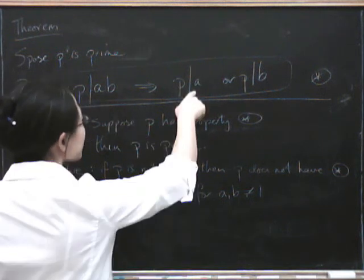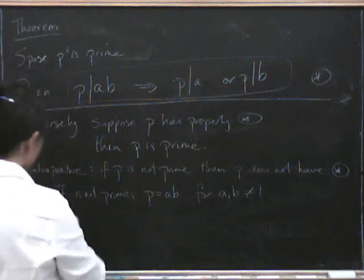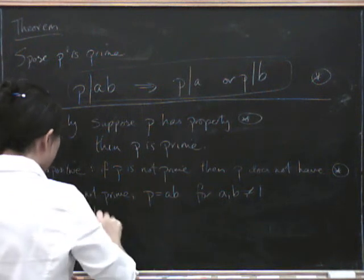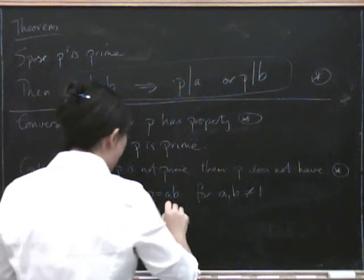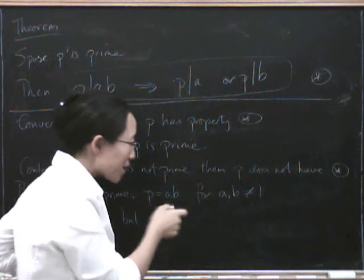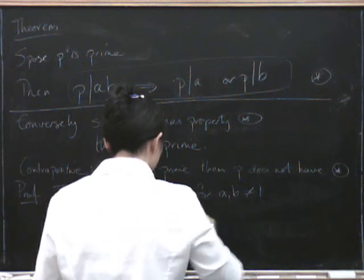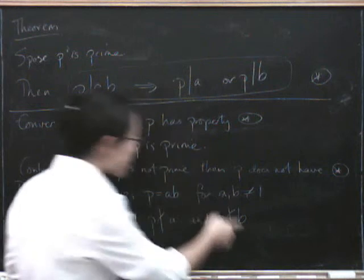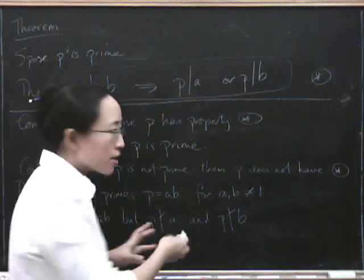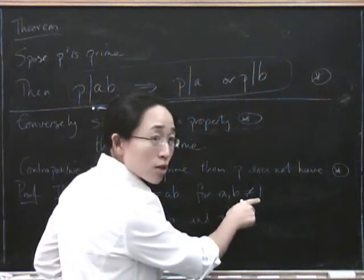But p doesn't divide a or b. Then, p divides ab, but p does not divide a, because p is a times something bigger. And p does not divide b, because p is b times something bigger.